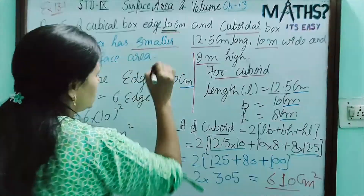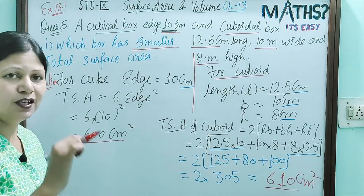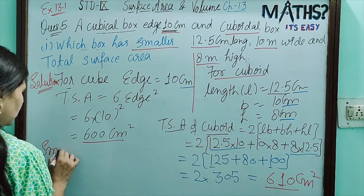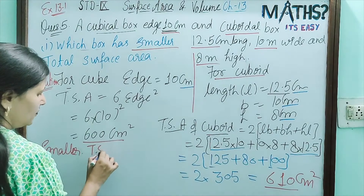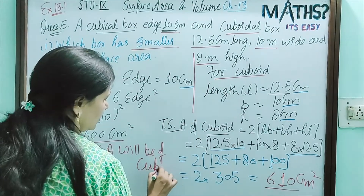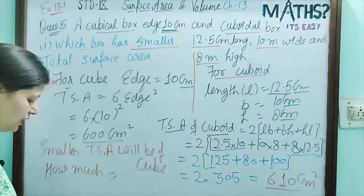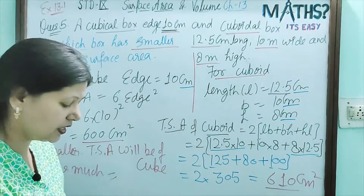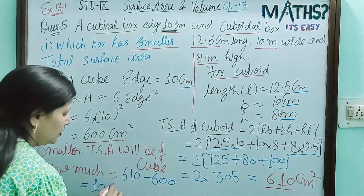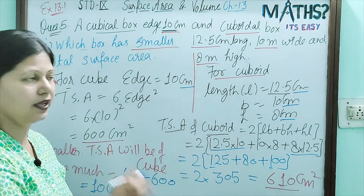So total surface area of the cuboid is bigger (610) and the cube is smaller (600). The question asked which box has the smaller total surface area — that is the cubical box. The cube's total surface area is smaller by 610 − 600 = 10 cm square.